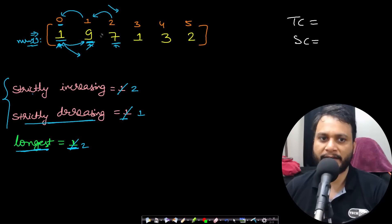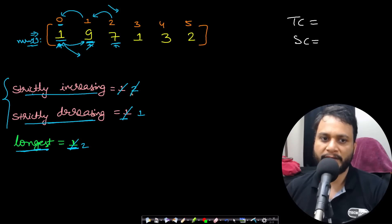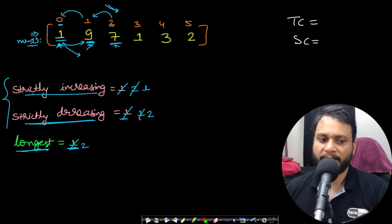Moving to the next index, if the value is strictly decreasing — say 7 is less than 9 — then the strictly increasing streak breaks and we reset that counter to 1. For strictly decreasing, since 7 can follow 9, we extend the length by 1. We keep track of the longest, which remains 2 at this point.